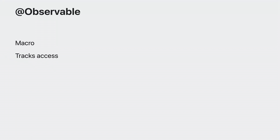Using the @Observable macro expands your types so they can support observation. This lets SwiftUI track access to those properties and observe when the next property will change. Tracking things like that lets your UI only recalculate the body of views when those specific properties change.